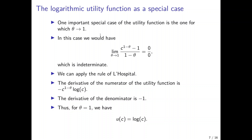An important special case of the isoelastic utility function is when theta converges to 1. If theta goes to 1, we have c to the power of 0, which is 1, minus 1 is 0, and in the denominator 1 minus 1 is also 0. So this is an indeterminate expression.